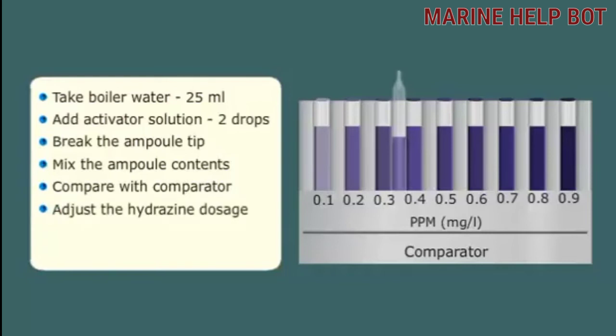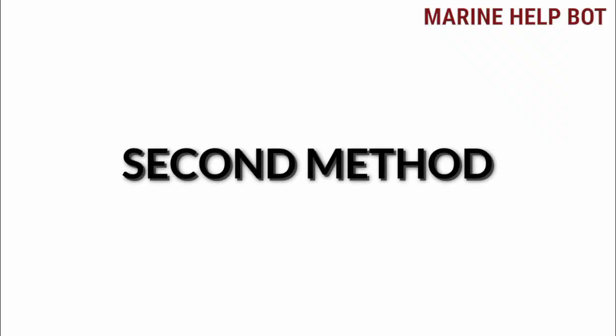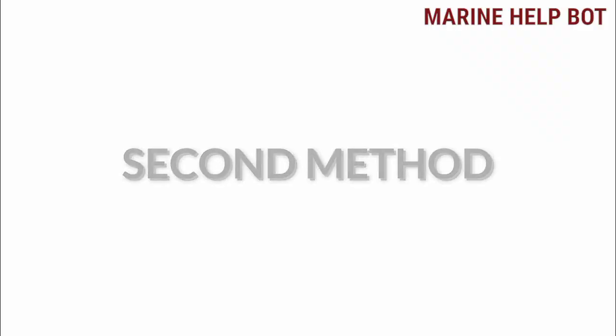Adjust hydrazine dosage to the boiler water so that hydrazine reserve is maintained between 0.1 to 1 parts per million. There is one more method by which we can perform this test.